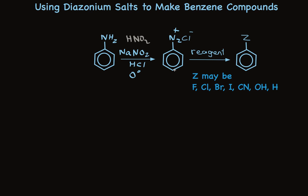After you've made the diazonium salt, you treat it with a reagent that replaces the N2+ with some substituent, which I've shown as Z. I've shown a list of seven things that Z can be: any of the four halogens, cyanide, hydroxyl, or even hydrogen.